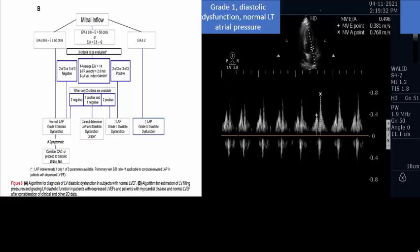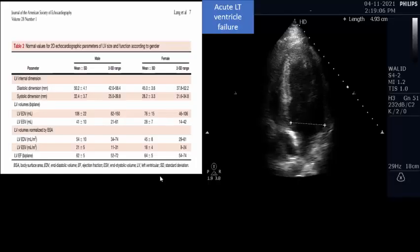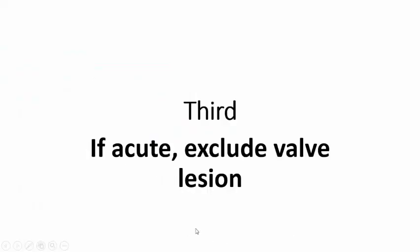Step two: determine whether the left ventricular failure is acute or chronic. If it is acute, the patient has no time to compensate and you will see very high left atrial pressure. If it is chronic heart failure, there will be remodeling and the patient has had time to compensate. According to the ASE guidelines on chamber quantification, the diastolic dimension of the LV in males ranges from 4.2 to 5.8 cm. In our patient, the diastolic diameter is 4.9 cm — less than 5.8 cm — meaning the patient has a normal LV diastolic diameter, consistent with acute LV systolic failure.